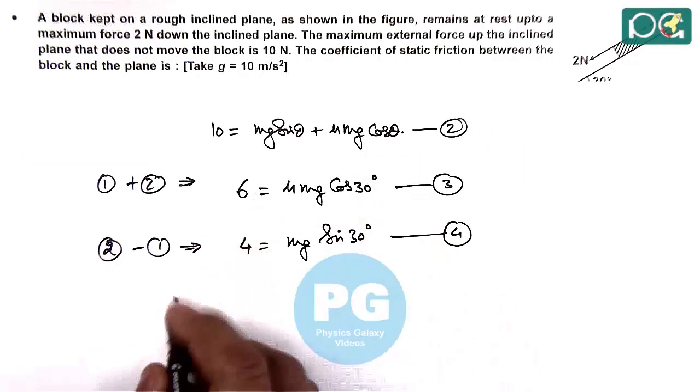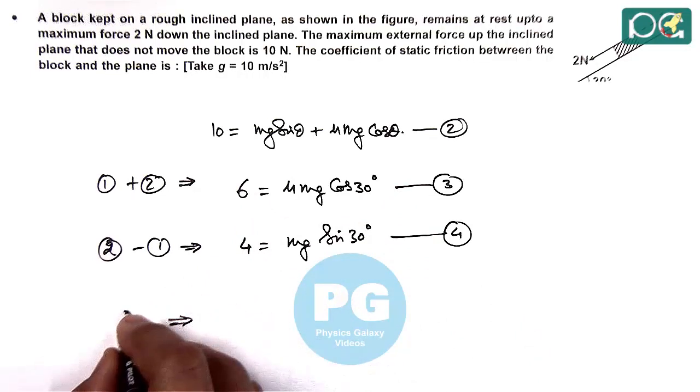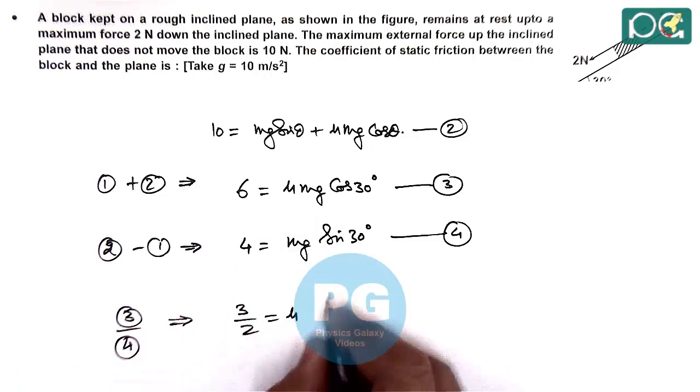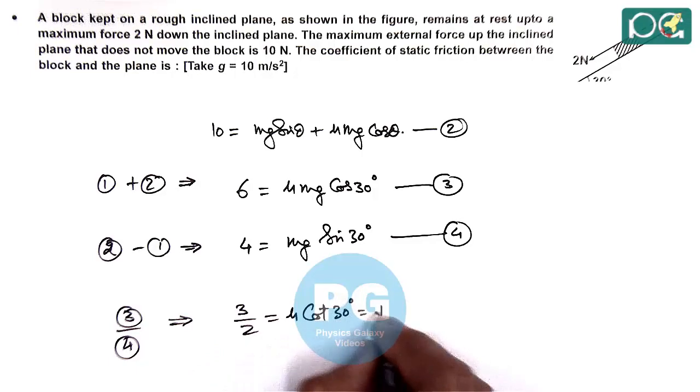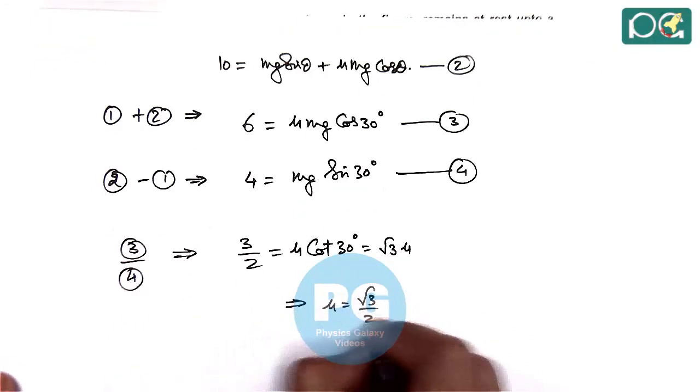Dividing equation 3 by equation 4 gives 6/4 = 3/2 = μ cot 30° = √3 μ. Therefore, μ = √3/2.